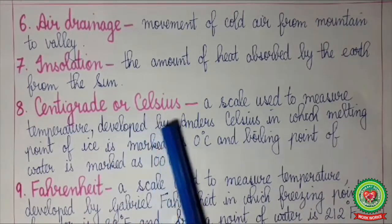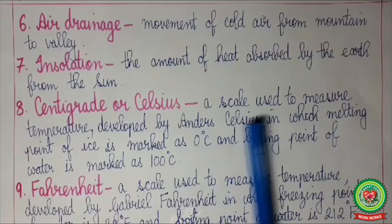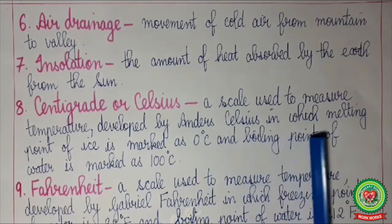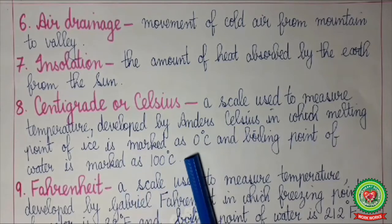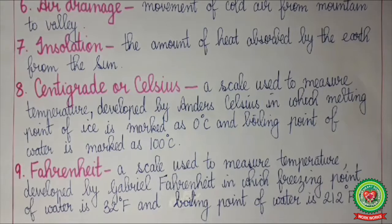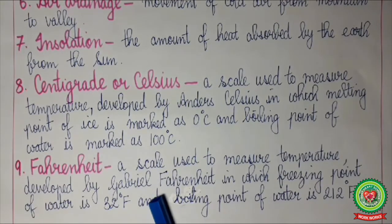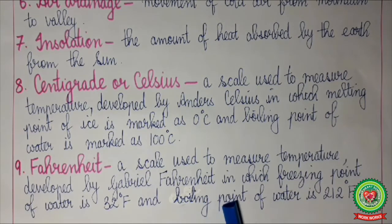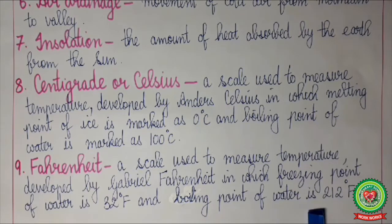Centigrade or Celsius scale: a scale used to measure temperature, developed by Anders Celsius, in which the melting point of ice is marked as 0 degrees Celsius and the boiling point of water is marked as 100 degrees Celsius. Fahrenheit scale: developed by Gabriel Fahrenheit, in which the freezing point of water is 32 degrees Fahrenheit and the boiling point of water is 212 degrees Fahrenheit.